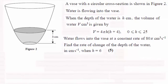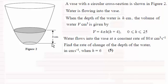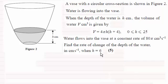Before we do this question, let's just have a brief recap. We're given this vase here and we're told that water is flowing into the vase. When the depth of the water is h, the volume of the water is v, given by this formula here. Water flows into the vase at a constant rate of 80 pi cm³ per second. We've got to find the rate of change of the depth of the water when h is 6.